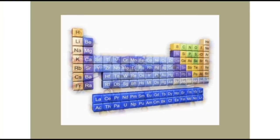Lanthanides are found in the 4F block of the periodic table and they start from element lanthanum and end with lutetium. Actinides are found in the 5F block of the periodic table and they start from actinium and end with lawrencium. The lanthanides have atomic numbers from 57 to 71, and actinides have atomic numbers from 89 to 103.